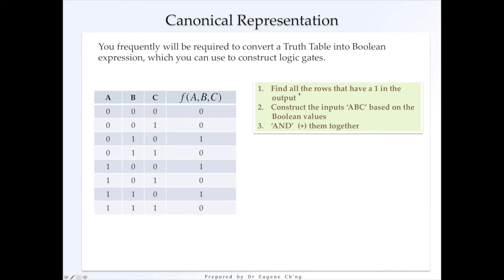So first, you have to find all the rows that have a 1 in the output. So we need a canonical representation of the truth table. So we're going to convert this into a Boolean expression. So we'll find all the rows that have a 1 in the output.